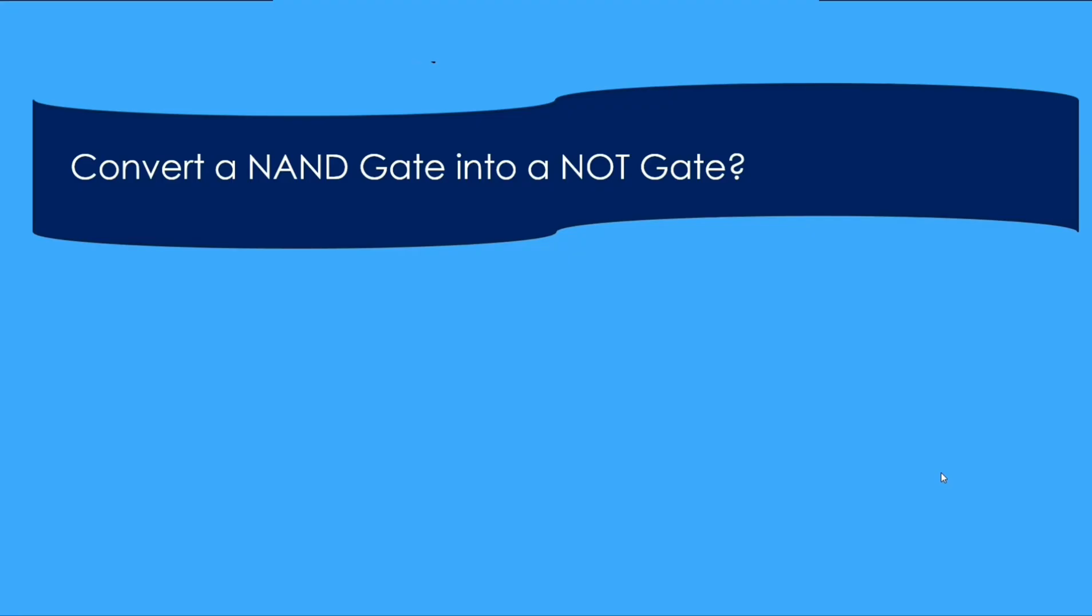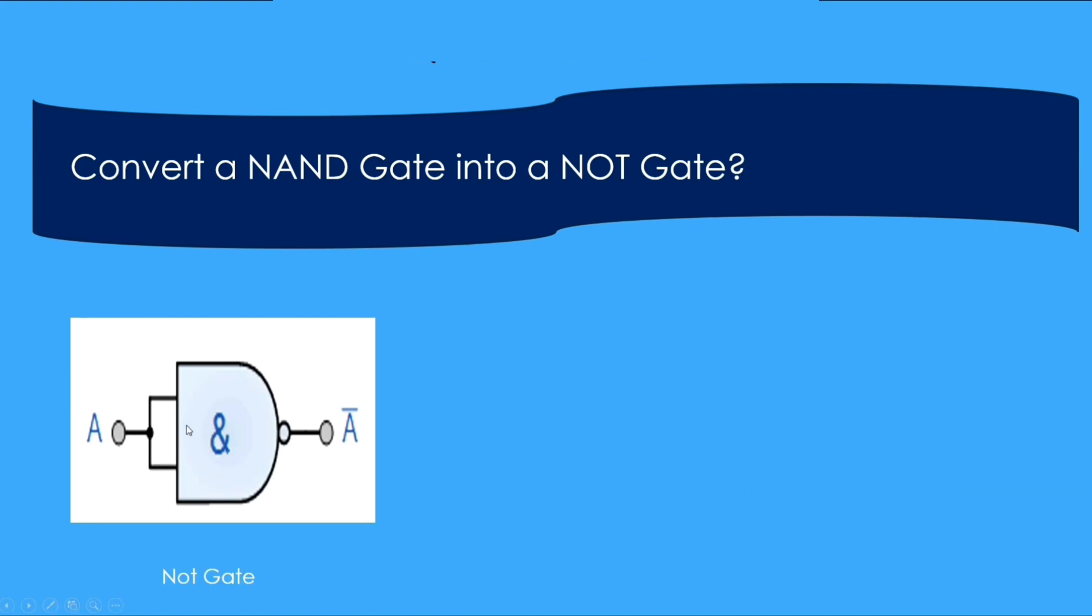Convert a NAND gate into a NOT gate. The answer is: tie both of its inputs to each other and make a single input. This will work as a NOT gate. If you apply zero at the input, you will get one at the output. If you apply one at the input, you will get zero at the output.